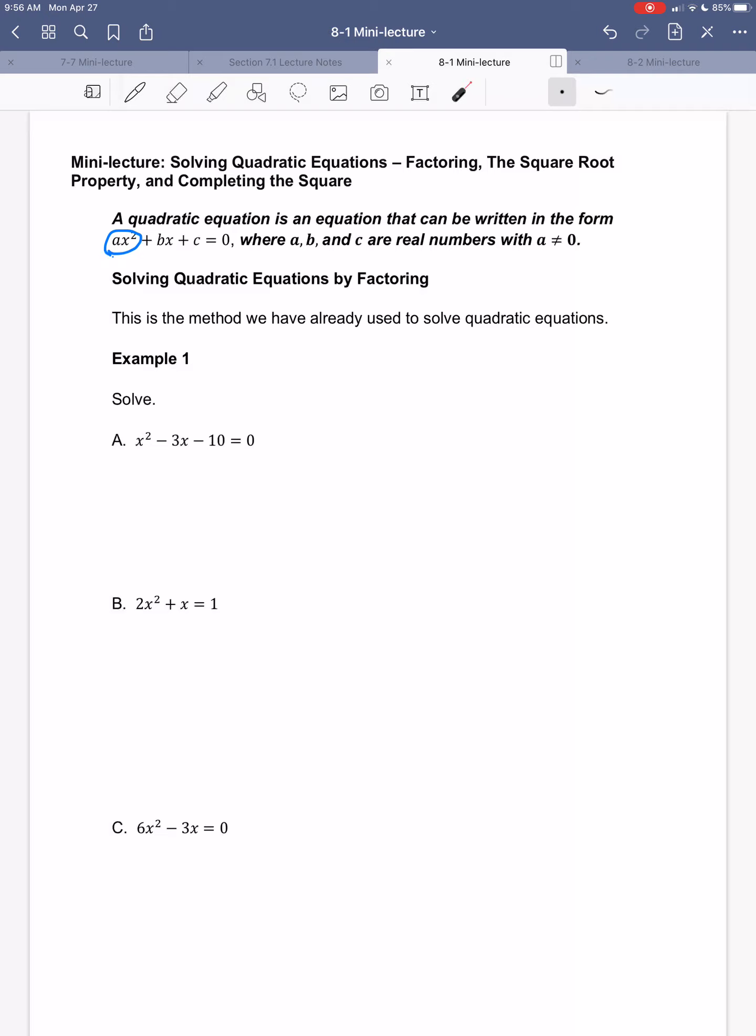Factoring, this is just a little bit of review. This is how we've always solved quadratic equations. When we have something here like in part A, we try to factor. We look at this and say, can I break that down into two binomials? We know the x squared has to be x times x. I need to get this negative 10. The fact that it's negative here means I need opposite signs.